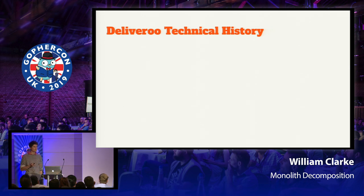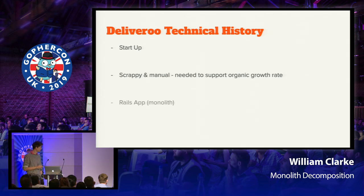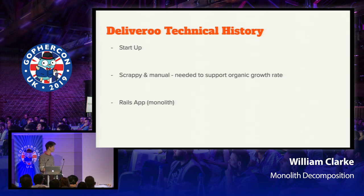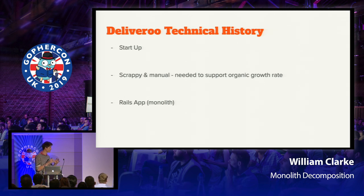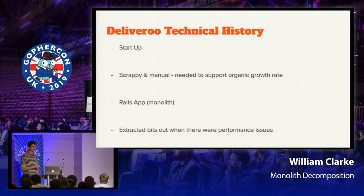It's important to understand where we came from. Deliveroo used to be a startup — very scrappy and manual. Like most startups, you need very quick growth to succeed. Rails and having a Rails monolith was the obvious choice, and I think it was probably the right choice — Deliveroo possibly wouldn't exist if we hadn't had this technical infrastructure that allowed us to change and iterate really fast, which you were able to do in a monolith. When there were performance issues, we extracted bits out.